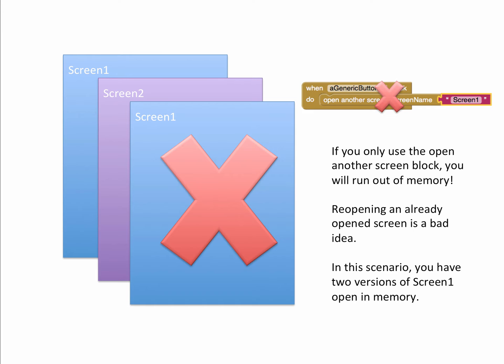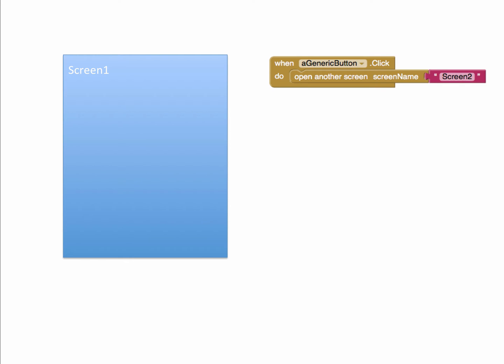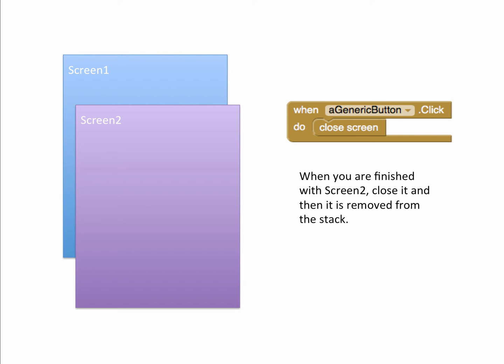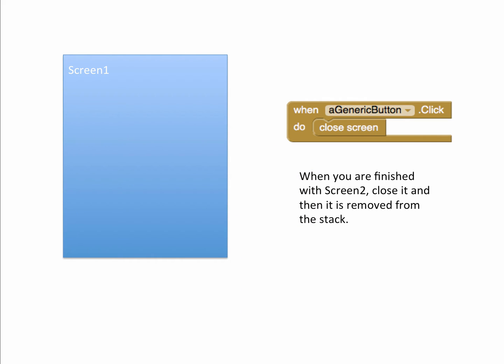What would be a better way to handle this? Start with Screen 1, tap the button to open Screen 2 - same as before, it's on top of Screen 1. But instead of opening Screen 1 again, when the button is tapped we want to close the current screen. When that button is tapped, Screen 2 is taken out of the stack, and by virtue of the fact that Screen 1 was there all along, it comes back into focus.